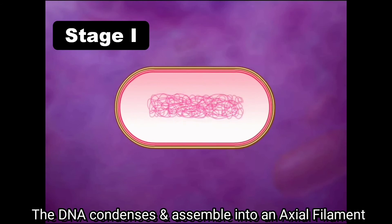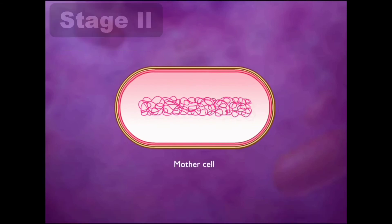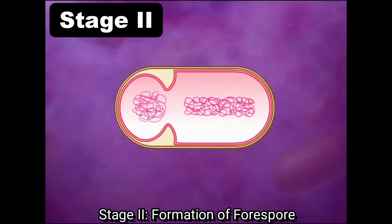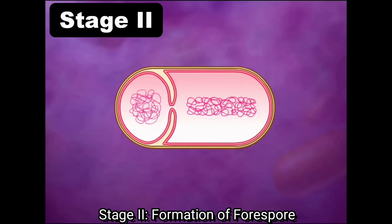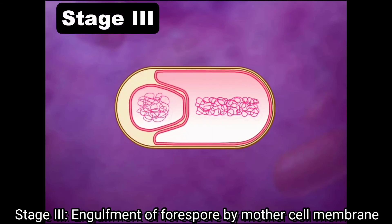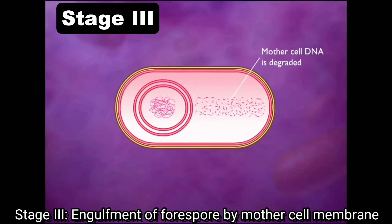In stage one, the DNA of the bacterial cell condenses and assembles into an axial filament. In stage two, the DNA divides into two copies. Then the mother cell membrane invaginates to form the forespore. In stage three, the mother cell membrane continues to grow and engulf the developing spore. Now the developing spore is surrounded by two membrane layers.